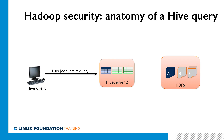Then Hive Server 2 will parse the query and submit it as a MapReduce job. We're not showing YARN here, but suffice it to say that YARN will take care of creating a bunch of processes on different nodes and make them access the required data in HDFS. Once everything is said and done and the MapReduce job completes, it will return its result back to Hive Server 2, which will incorporate that result in the query answer returned to the client.